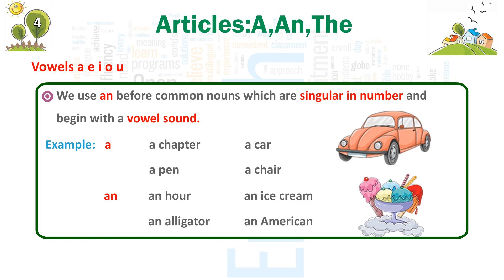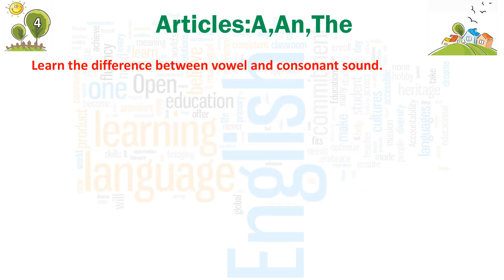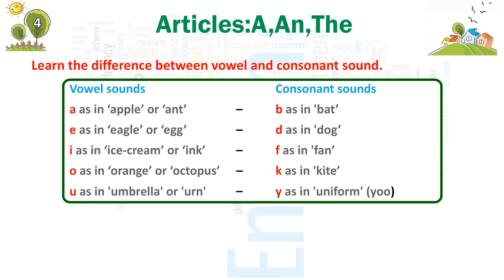Examples: A — a chapter, a car, a pen, a chair. AN — an R, an ice cream, an alligator, an American. Learn the difference between vowel and consonant sound.